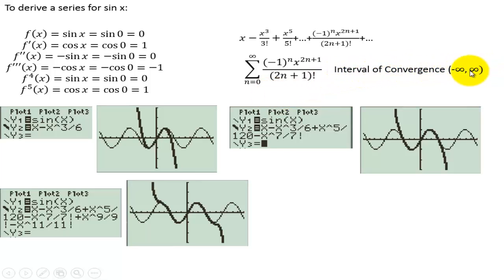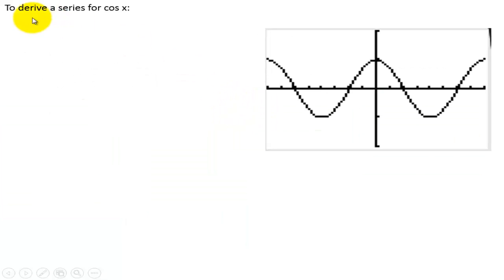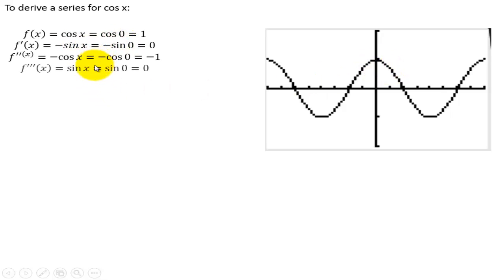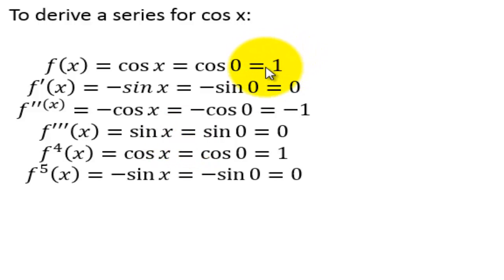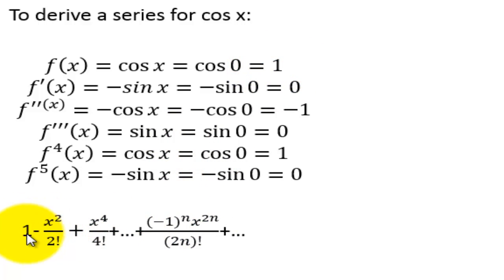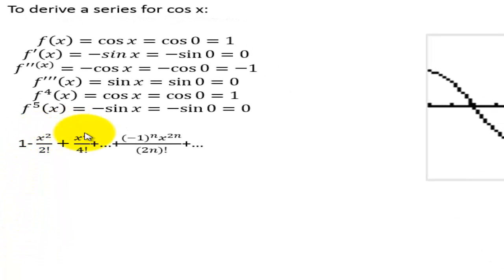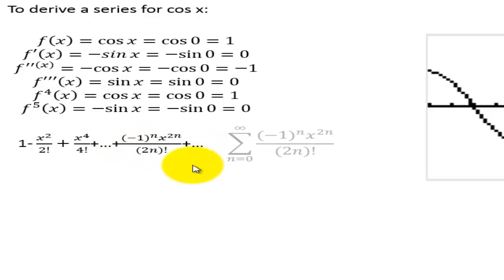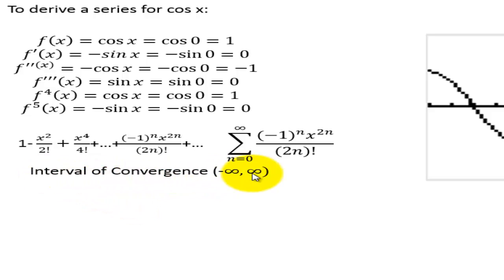The interval of convergence is negative infinity to infinity. To derive a series for cosine — now this is an even function. When we take all the derivatives and plug 0 in, it has the same pattern but starts with 1 rather than 0. So the series ends up with x to the 0 — that's even — then x squared, x to the fourth, and we are alternating signs. So anytime we alternate signs — plus, minus, plus, minus — we have negative 1 to the n, times x to the 2n over 2n factorial, starting n at 0. The interval of convergence is negative infinity to infinity.